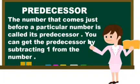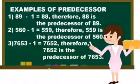The definition of predecessor is the number that comes just before a particular number is called its predecessor. You can get the predecessor by subtracting 1 from the number. So look at the examples.